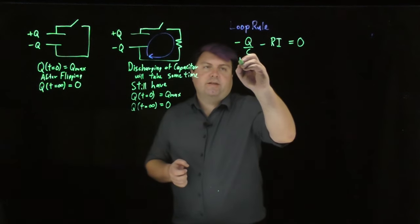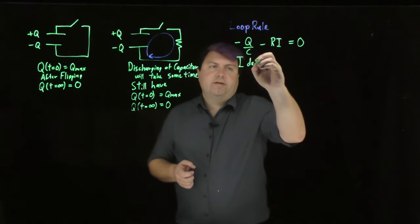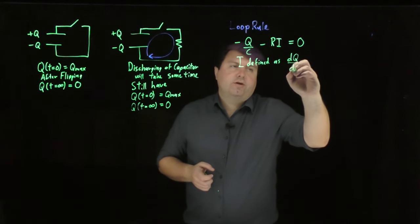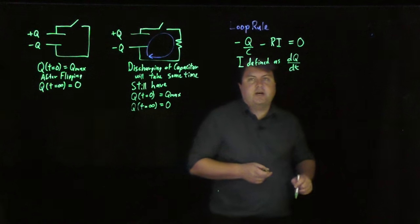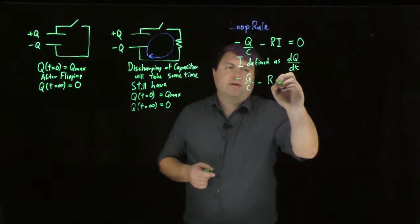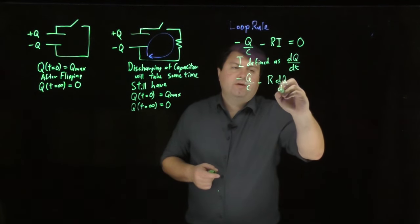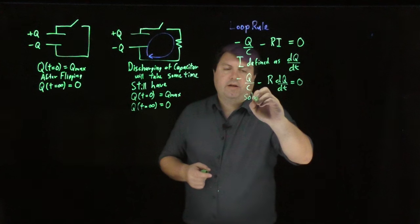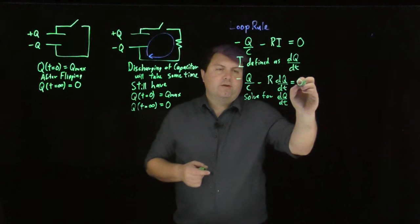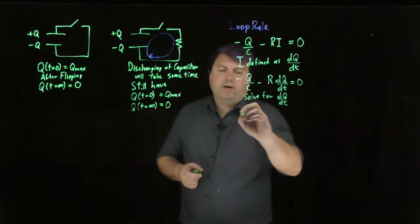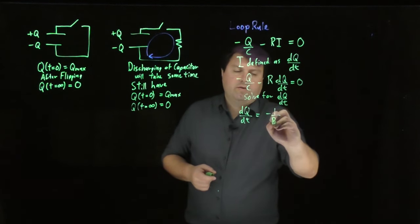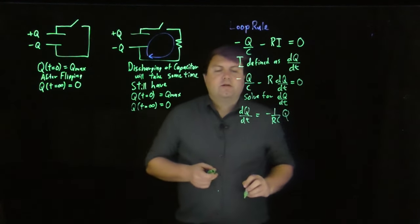Now, our last thing is that the current is defined as the change in charge over the change in time. So now I can write this as negative q over c minus r times dq dt equals zero. And I can solve for dq dt. So bringing this over and then dividing by r. So I would get dq dt equals negative one over rc times q.